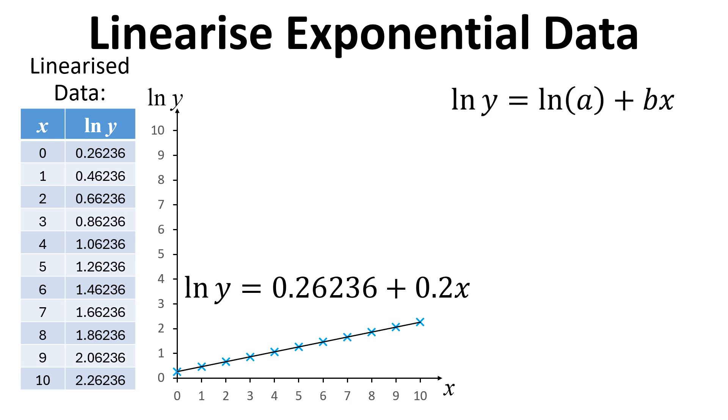If we think back to the equation we had before that was linearized, we can actually compare the coefficients now. So the gradient b is the 0.2. And we also know that natural log of a is just going to be a constant term. So that is our intercept, which relates to the 0.26236.